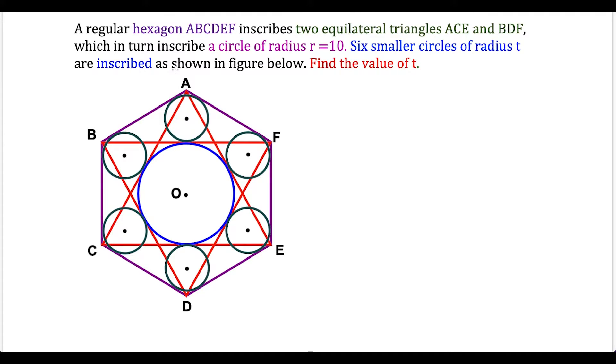What's up? I'm Vin, and today I want to take a look at this geometry problem. We have a regular hexagon ABCDEF and it inscribes two equilateral triangles ACE and BDF, which in turn inscribe a circle of radius r = 10. Six smaller circles of radius t are inscribed as shown in this figure. We need to find the value of t.